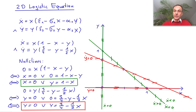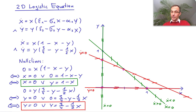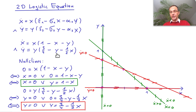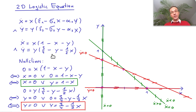We can make a similar consideration for y. So y dot is zero directly on the nullcline — that's how we chose these values. But if we increase y a little bit, since this is positive, this gives a negative contribution, so y dot will be negative. If you go a little bit above the nullcline, y dot is negative.